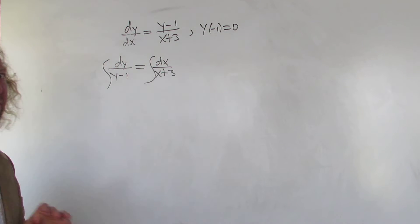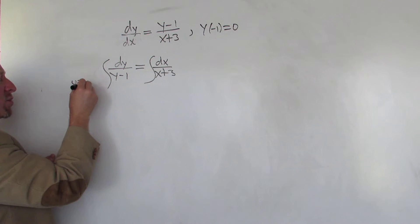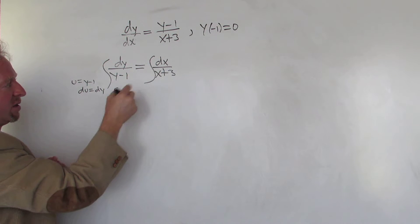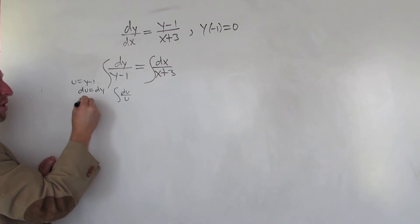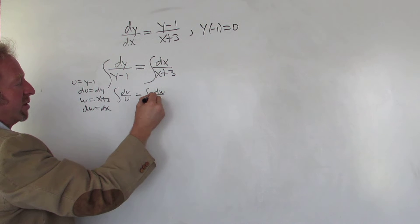These are both very simple integrals. To do this, you would let u equal y minus one, so du is just dy. Then you replace everything, so you would get du over u. To do this one, you would just let w equal x plus three, and then dw is dx. It's not even necessary to make a substitution - dw over w.